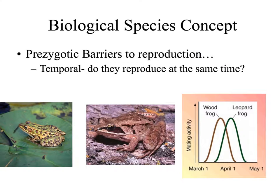Another type of prezygotic barrier is temporal isolation, which has to do with the timing of reproduction. If we look at the leopard frog and the wood frog, we see that they look fairly similar. However, the wood frog and the leopard frog reproduce at different times during the year.